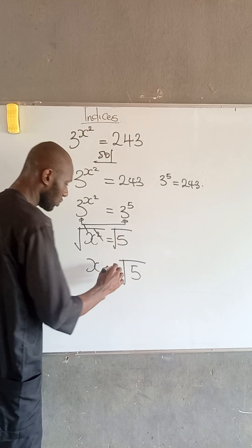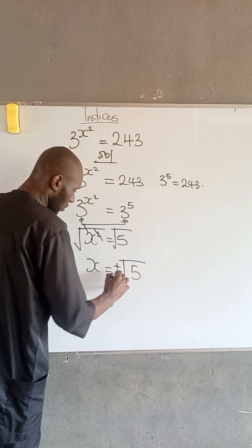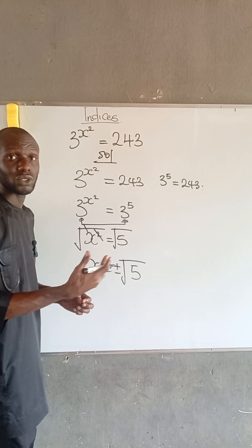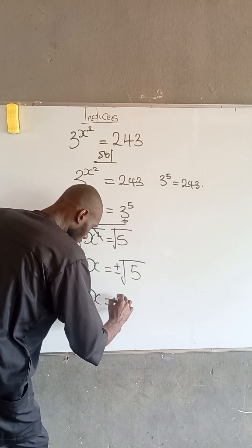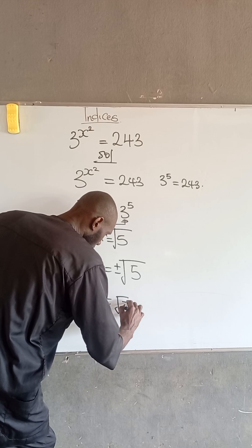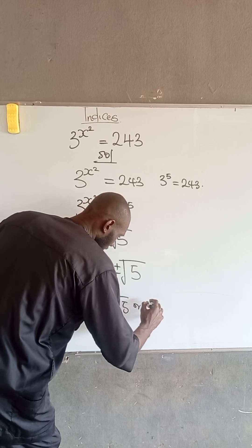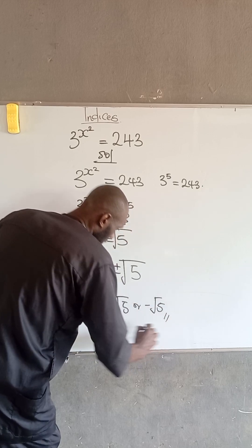And please, you must put plus or minus because you are taking the root of both sides. Therefore, x is equal to root 5 or x is equal to minus root 5.